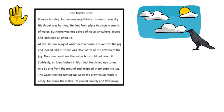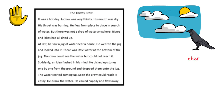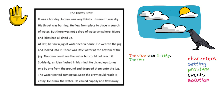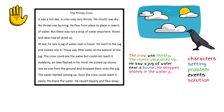Now I want you to think about the five parts of retelling. Pause the video to see if you can come up with a five finger retell by yourself. Retelling this story should look something like this: The crow was thirsty. The rivers were dried up. He saw a jug of water near a house. He dropped stones in the water jug to make the water rise. He drank the water.